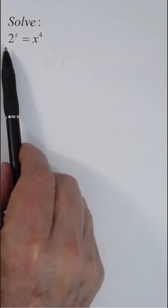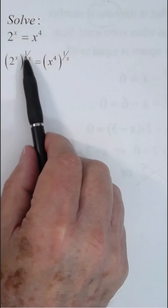Solve 2 to the x equals x to the 4th. Raise both sides to the 1 over x. We multiply the exponents.